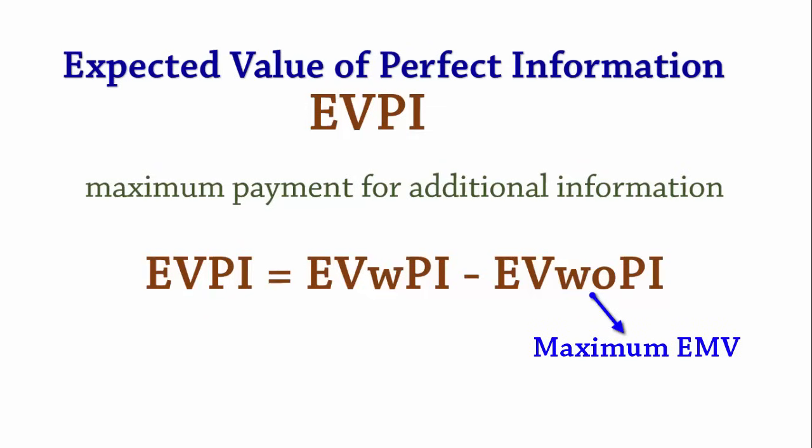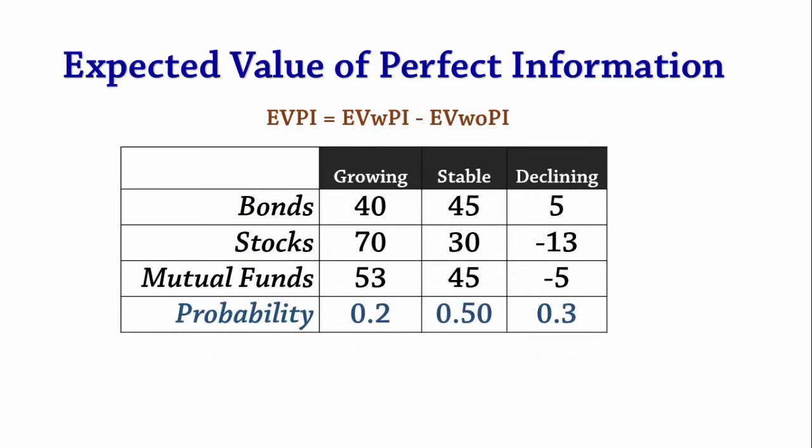The maximum EMV was determined to be 32 earlier. To calculate EVwithPI, the expected value with perfect information, we choose the best payoff for each state of nature and multiply them by the probability of their state of nature and add the results.